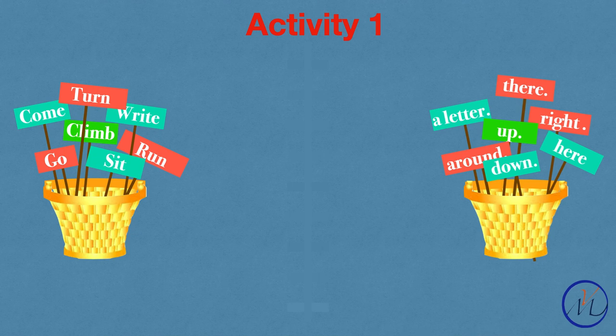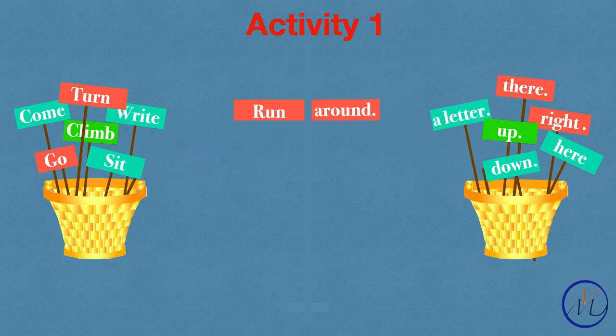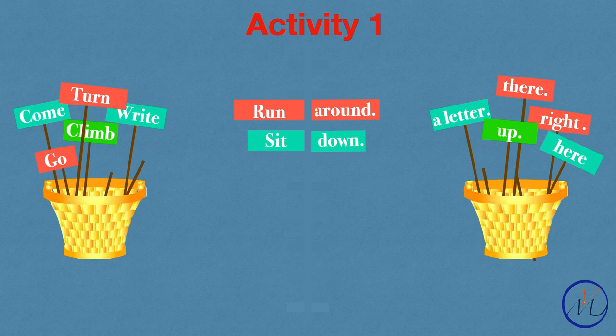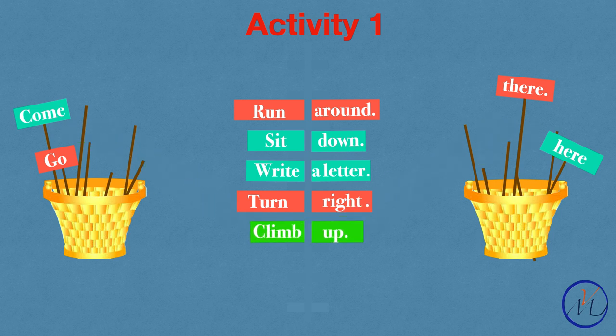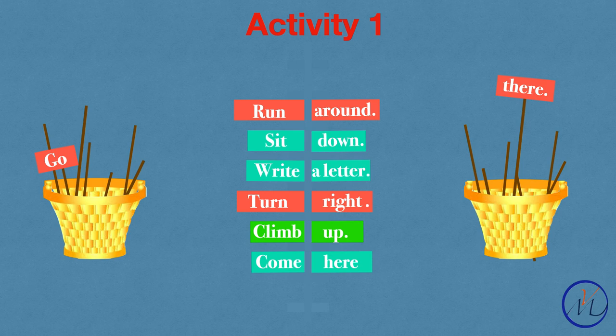Students, here there are two baskets full of words. Now we will take one word from each basket and make a sentence. So now let's start: run around, sit down, write a letter, turn around, climb up, come here, go there.